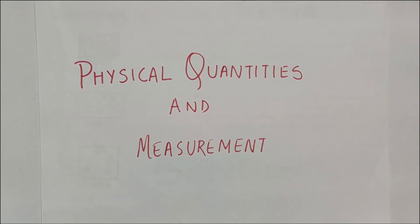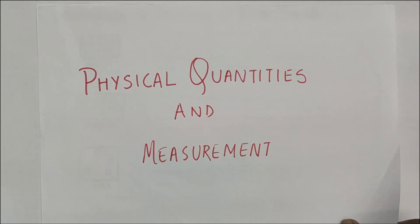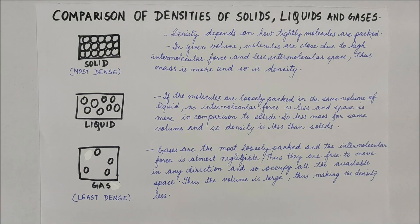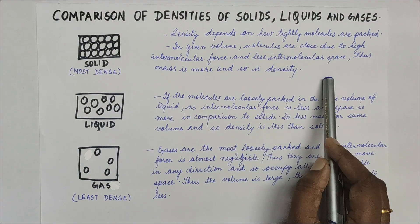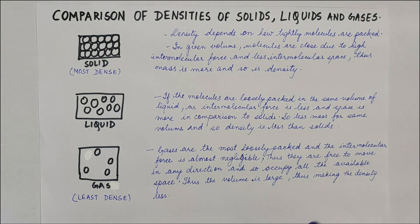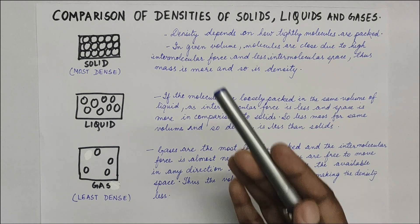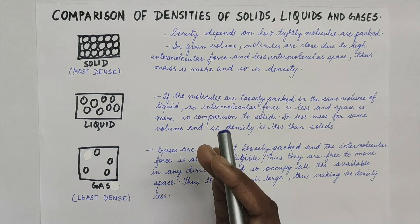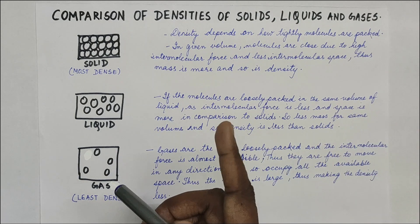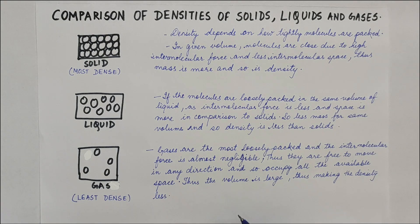Hello students, today we are going to do the next part of the chapter on physical quantities and measurement. We are going to learn about comparison of the densities of solids, liquids, and gases. I have made some diagrams and written some points to understand how density is impacted with the change in states of matter — how it affects mass and volume. You know density depends upon two factors: mass and volume. Let me write the formula here for you.